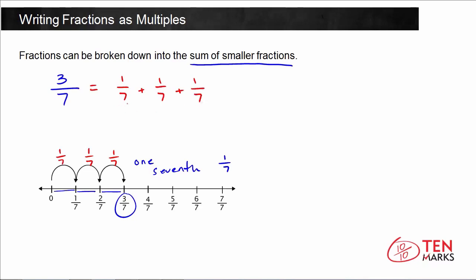This is a repeated addition sentence because we're adding the same fraction a bunch of times — in this case we're adding it 3 times. You might also recall that repeated addition and multiplication are related, and this means you can express 3 sevenths as a product as well. When you're adding the same fraction or number to itself, that becomes one of the factors in your multiplication sentence. The other factor is how many times you added.